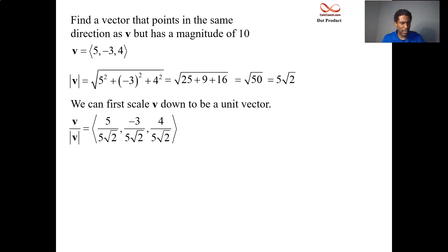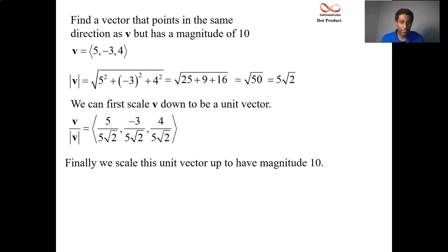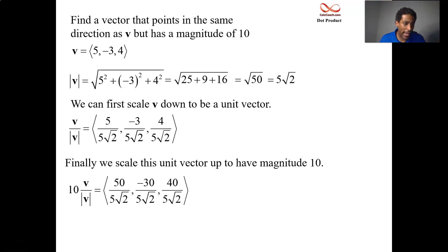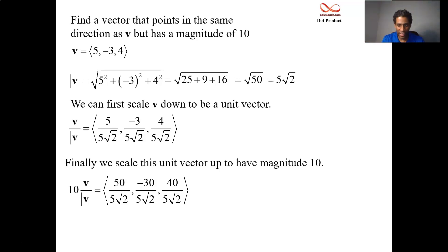We could simplify, rationalize, and so on, but let's leave it as is because this vector has length 1. Now we take this vector of length 1 and scale it by 10 so it has length 10. We broke it into two steps — scale it down, scale it up. We didn't have to do that; we could have found a single scaling factor that does both at the same time. If we take the unit vector and multiply by 10, the numerators get the zeros in there, and this vector has magnitude 10 and points in the same direction as V.